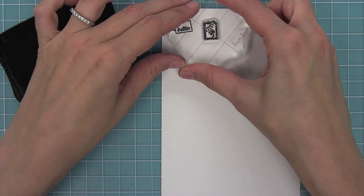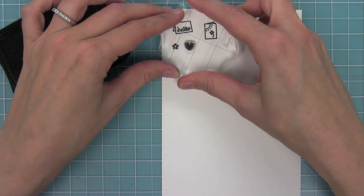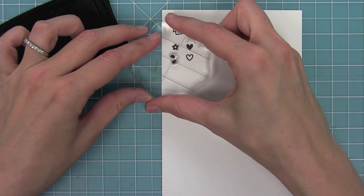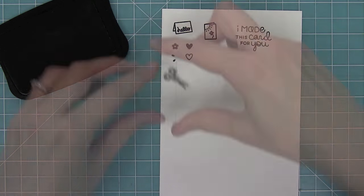First I'll be stamping out the images from Just For You. We have these cute little cards, a great flower, and a solid and open heart. We have these little lines there that are great leaves for the flowers.